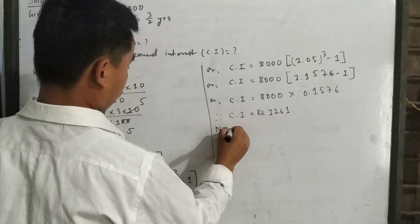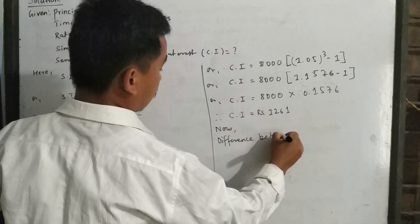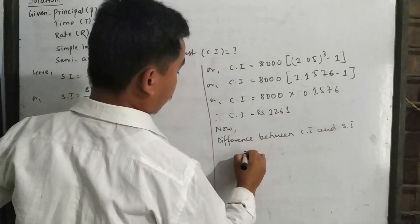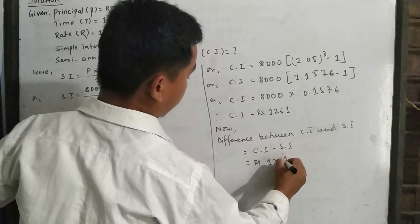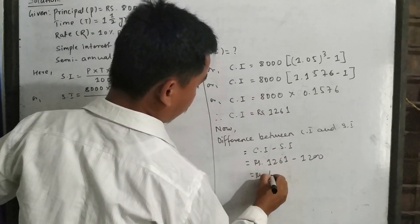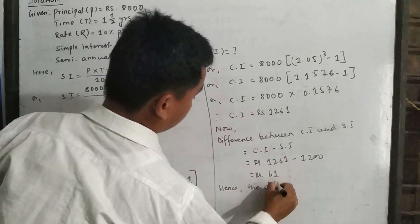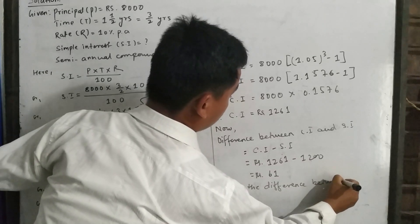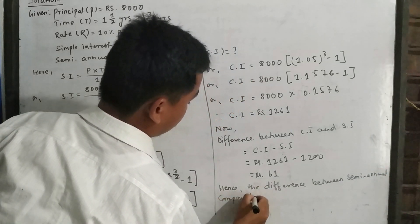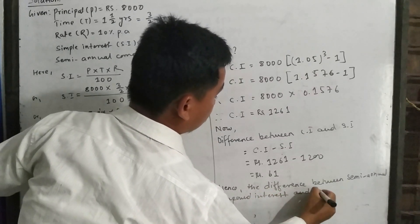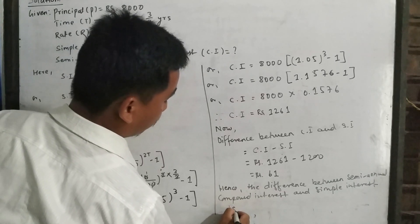Now the difference between semi-annual compound interest and simple interest equals CI minus SI = rupees 1261 minus rupees 1200. The answer is rupees 61. Hence, the difference between semi-annual compound interest and simple interest on the given values of P, T, and R is rupees 61.